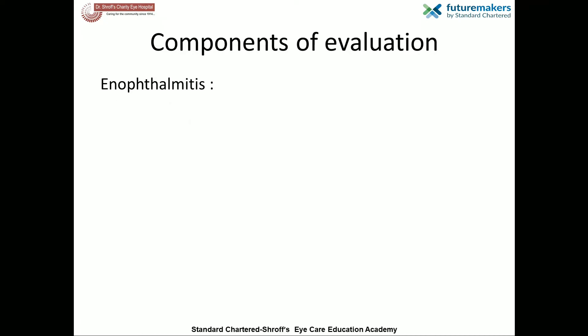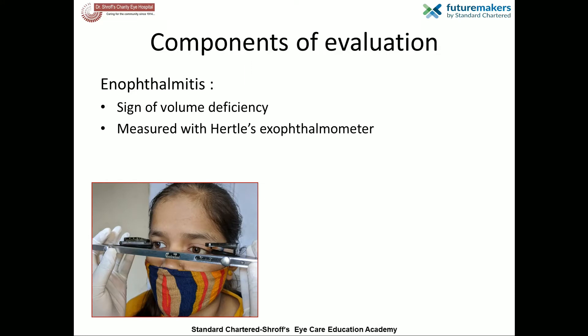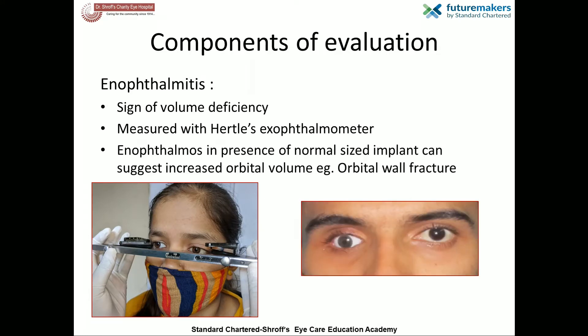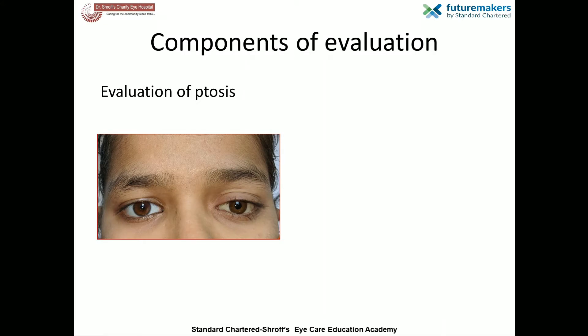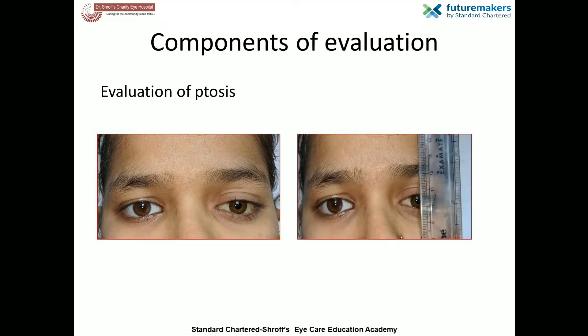Enophthalmos is useful in quantifying the volume deficiency and is measured with Hertel's exophthalmometer. Enophthalmos in the presence of a normal-sized implant may suggest increased orbital volume, as in cases of orbital fractures with a history of trauma. The position of both the upper and lower eyelids in comparison to the other eye is important. Ptosis, or drooping of the upper eyelid — which may be pre-existing or due to anophthalmia — should be thoroughly examined.